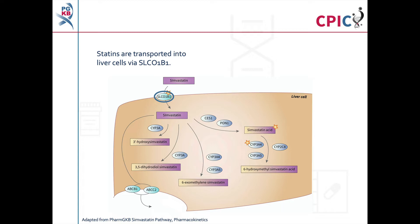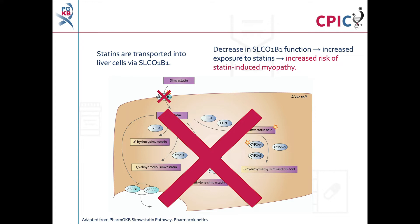Simvastatin is used here as an example of the relationship between statins and SLC01B1. Statins are used to lower cholesterol production in the body by inhibiting the enzyme HMG-CoA reductase. They are transported into liver cells by transporter proteins encoded by the gene SLC01B1. Patients with decreased SLC01B1 function have increased exposure to simvastatin as transport into liver cells is reduced, which can increase the risk of statin-induced myopathy.